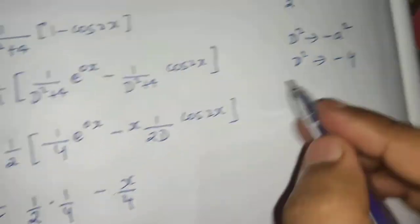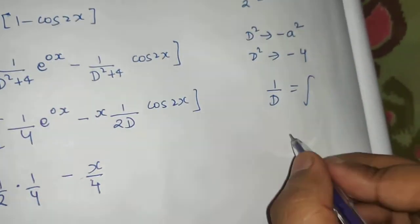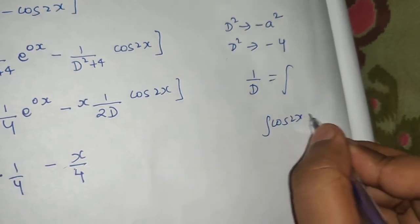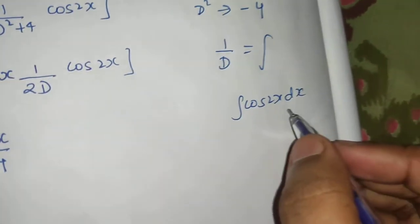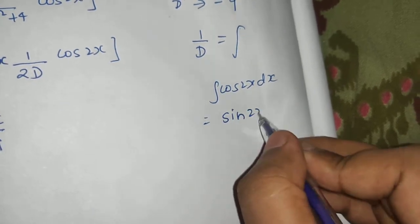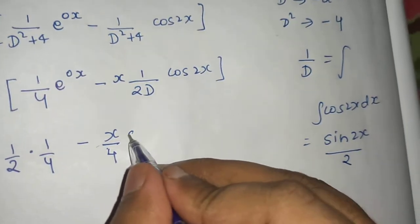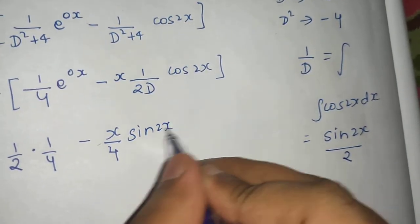So x by 4, 1 by d is same as integration. So integration of cos 2x dx - integration of cos ax is simply plus sin ax, so sin 2x divided by the coefficient of x, which is 2. So sin 2x divided by 2.